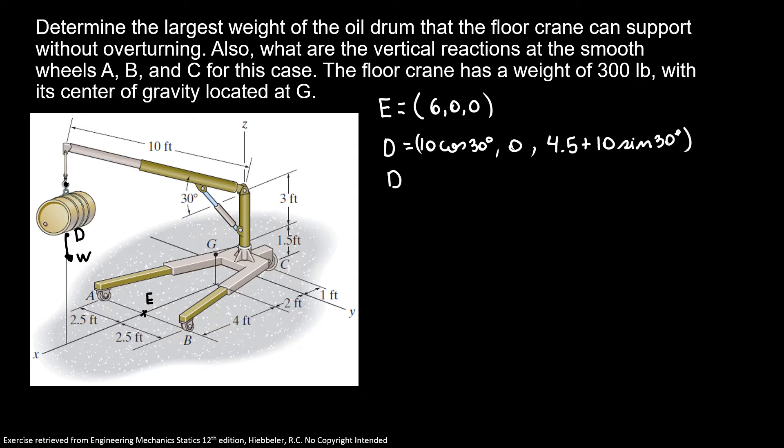So, our point D is equal to (8.66, 0, 9.5). And now we know that to find the maximum weight, the normal force at C is equal to zero, where our crane has virtually zero reaction at that point.